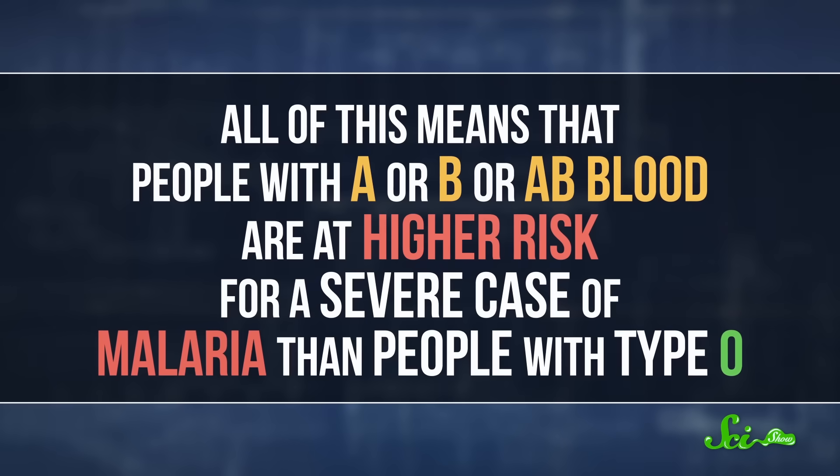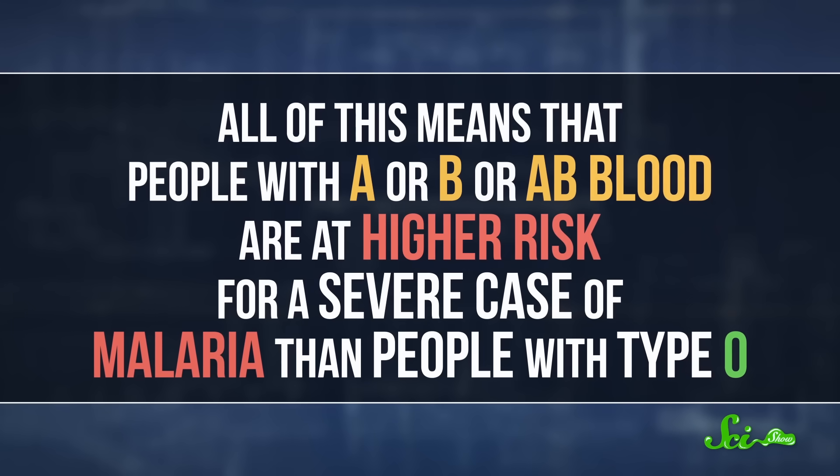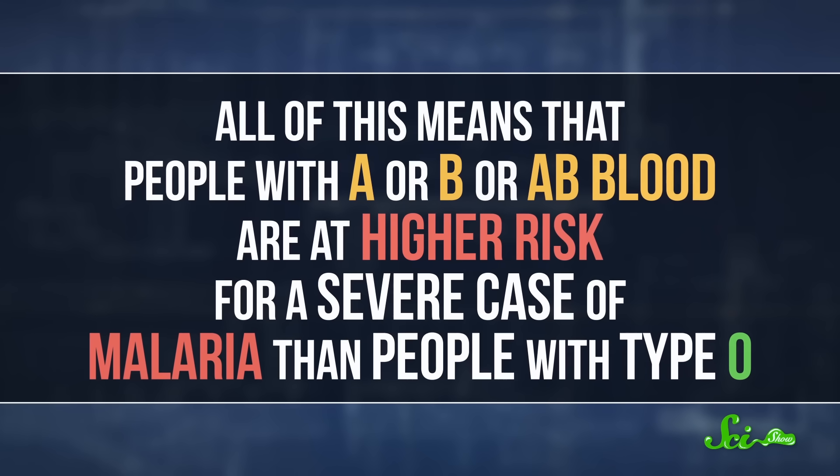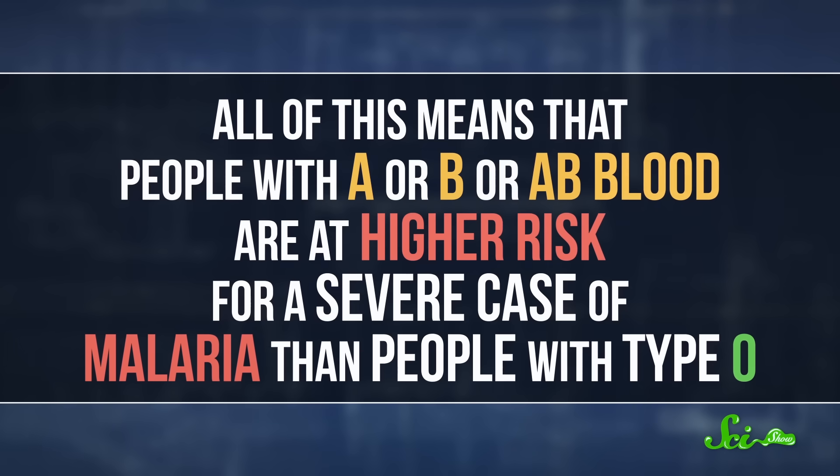But when rosettes get tucked away like this, it also prevents the infected cells from being cleaned up by your body's natural defenses. All of this means that people with A or B or AB blood are at higher risk for a severe case of malaria than people with type O.